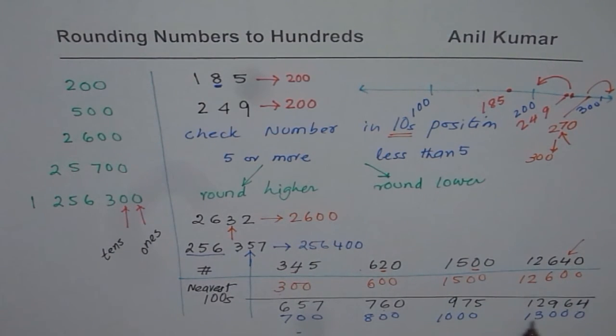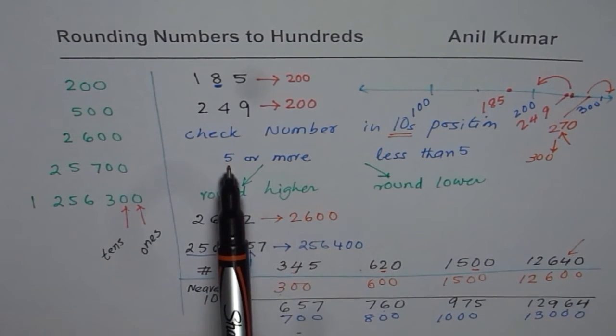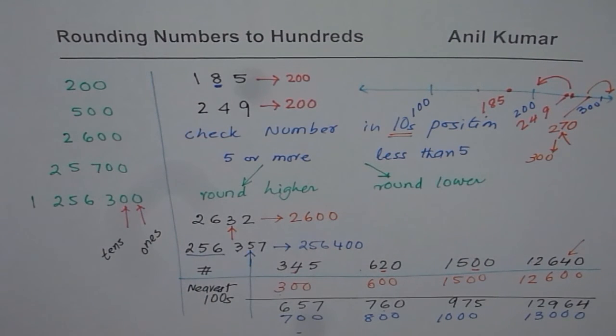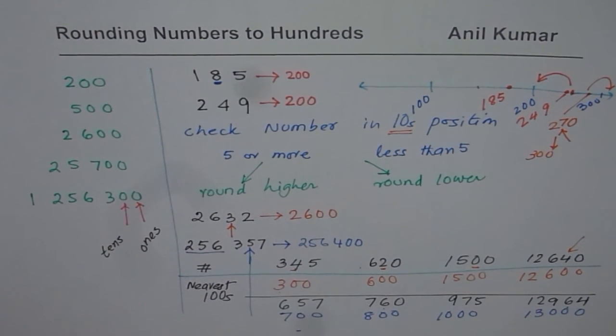Now think about it. How did we get 13,000, 1,000, 800, 700? Only because tens position had a number which was 5 or more. So we add a higher number while rounding to hundreds. That is how we do it.